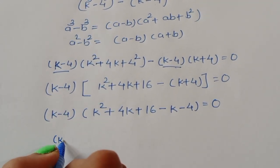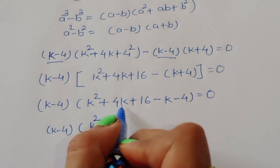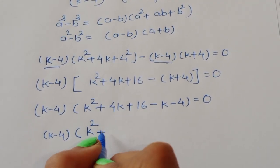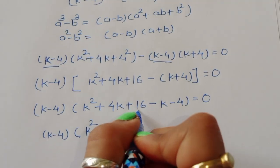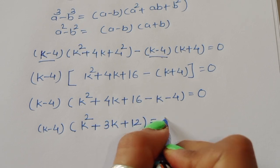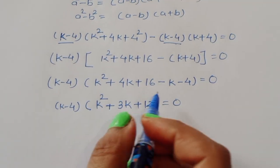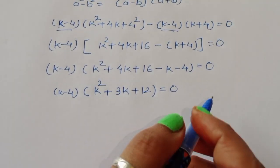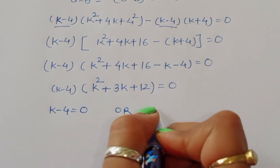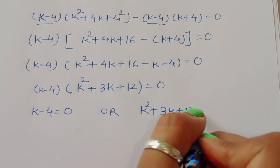Simplifying inside the bracket: 4k minus k gives 3k, and 16 minus 4 gives 12. So we get (k minus 4)(k squared plus 3k plus 12) equals 0. This gives two equations: k minus 4 equals 0, or k squared plus 3k plus 12 equals 0.